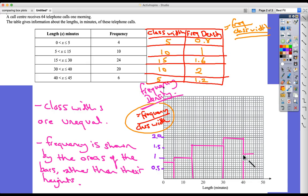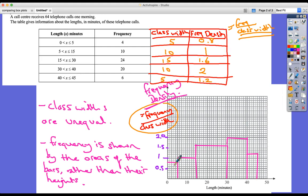Now let's reassess. So this one here is showing a frequency of 4, this one's showing a frequency of 10, this one's showing a frequency of 24, and then 20 and then 6. It looks much more in proportion, doesn't it?